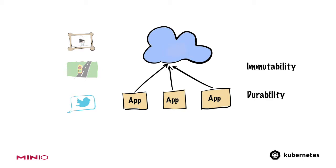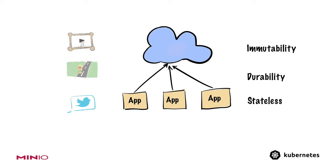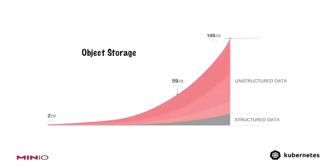Applications that store data over the network also gain another property — they become stateless. The great thing about stateless applications is that they are easier to manage, easier to deal with when they fail, and easier for people and processes around them to scale along with the application. And all that needs to be done for applications to become stateless is to use this form of storage, which is called object storage. It's no surprise that object storage is the fastest growing trend in storage and has been for the last 10 years.